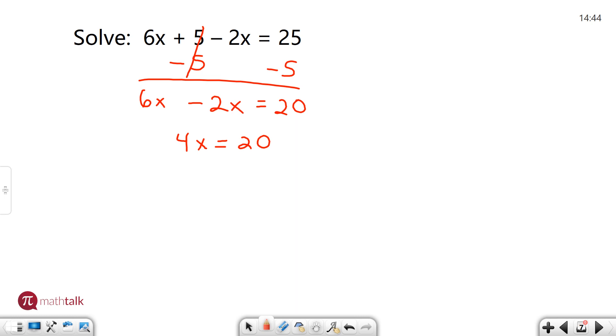Now this becomes a one-step equation. In this particular instance we have 4 times x, so to solve it we're going to do the opposite. Divide by 4, divide by 4, and I get x equals 5.